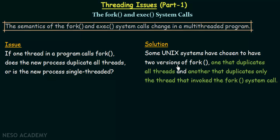The other version of fork duplicates only the thread that invoked the fork system call, leaving all other threads in the process not duplicated. Keep in mind that threads are part of a process, and a process can consist of a number of threads. So the issue is whether to duplicate only the invoking thread or all threads in the process, and two versions of fork are provided to tackle this.